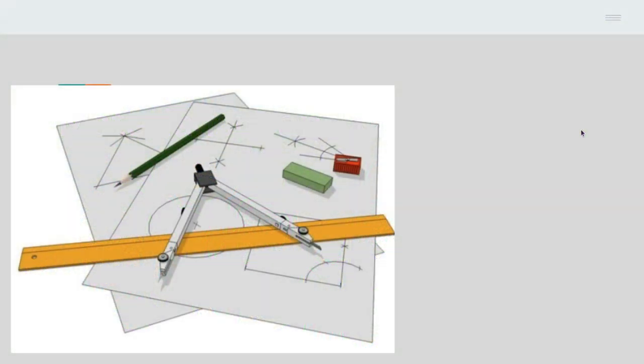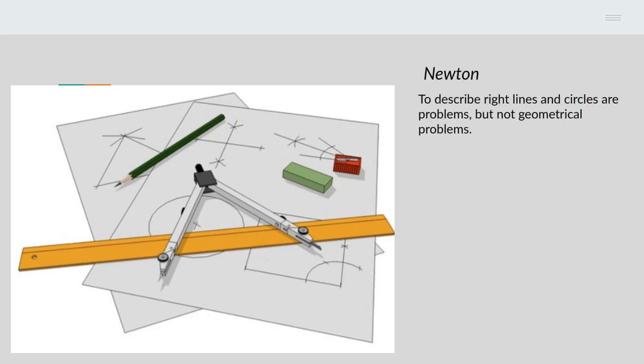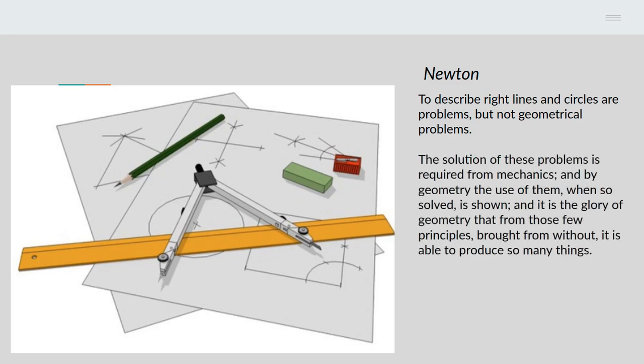Now geometry is something which uses geometrical tools. Reading Newton a couple of days ago, I found a very good quote from him emphasizing the close relationship that exists between geometry and mechanical actions or mechanical activities. He says, to describe right lines and circles are problems, but not geometrical problems. By a right line he means a straight line. The solution to these problems is required from mechanics, and by geometry the use of them when so solved is shown.